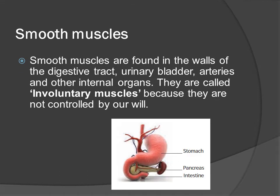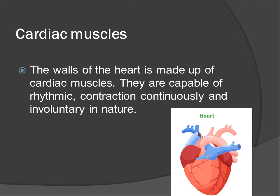Smooth muscles are found in the walls of the digestive tract, urinary bladder, arteries and other internal organs. They are called involuntary muscles because they are not controlled by our will. Examples include the stomach, pancreas and intestines. The walls of the heart are made up of cardiac muscles, which are capable of rhythmic contraction continuously and are involuntary in nature.